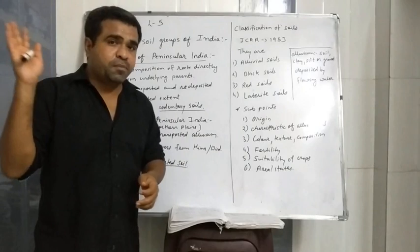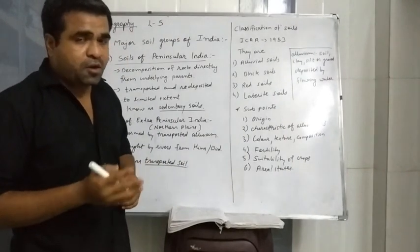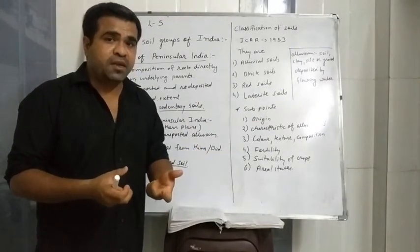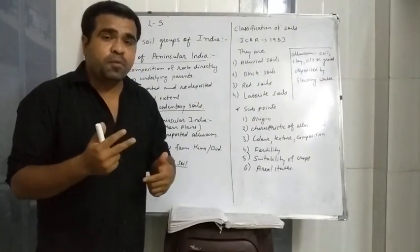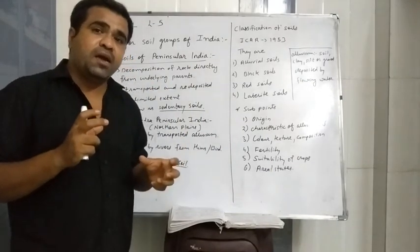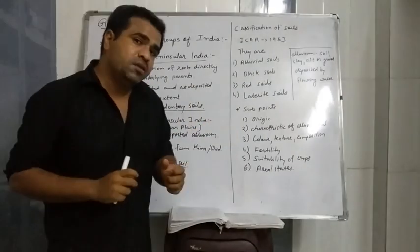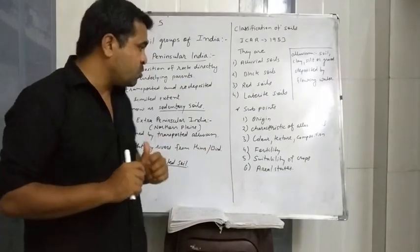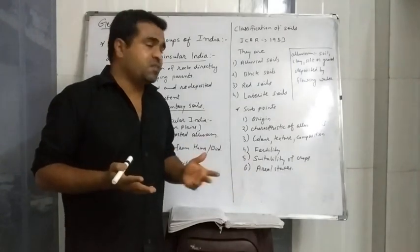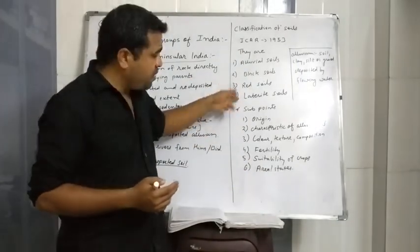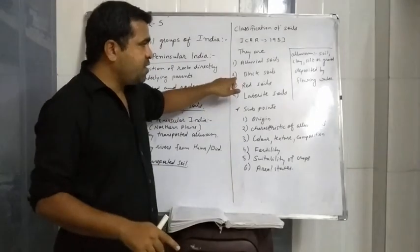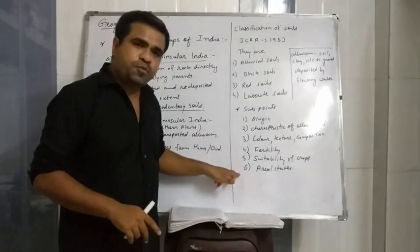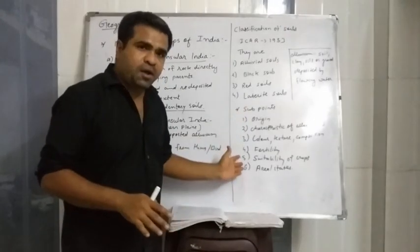Suitability for crops means which type of crops can grow in a given soil, and the quality difference matters. In which area and state the soil is found is also considered. The four soil types include alluvial soil, black soil, and red soil — all these points will come under classification.